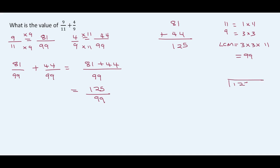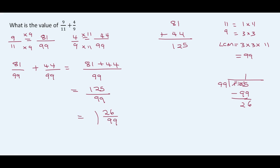Adding 81 plus 44: 1 plus 4 is 5, 8 plus 4 is 12 — so we have 125 over 99. There is only one group of 99 in 125. 1 multiplied by 99 is 99. Subtracting: 5 minus 9, we borrow — 15 minus 9 is 6, borrow again — 11 minus 9 is 2. So this gives us 1 and 26 over 99, and that is our final answer.